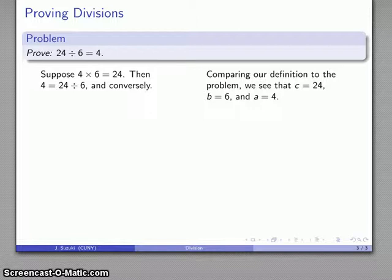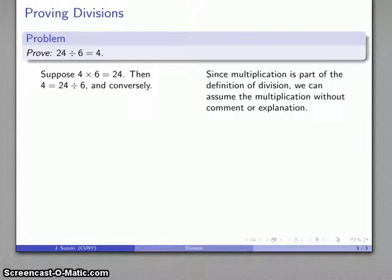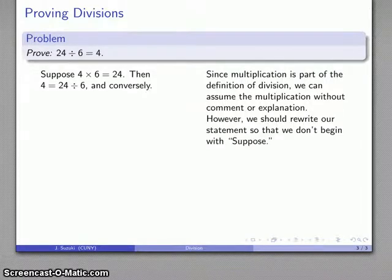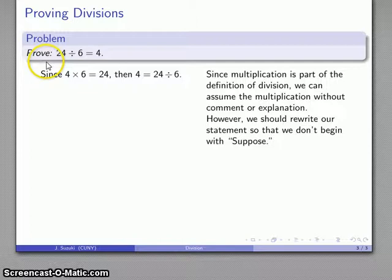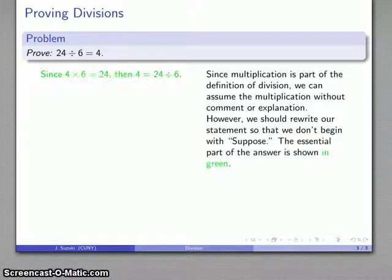And again we'll add a little bit of words to make everything come out a little bit easier to read. And so I might say something like since 4 times 6 is equal to 24, then 4 is equal to 24 divided by 6. And again as a proof problem what I have to include is the portions written in green.